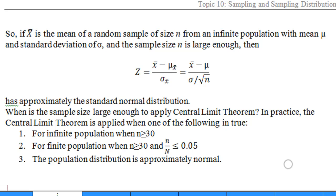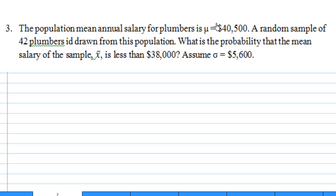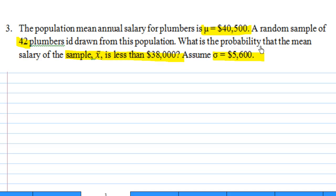So now we can answer that question. We know that mu is $40,500, we have a sample of size 42, and this is more than 30. n is 42, and we want to find the probability that the sample mean x-bar is less than $38,000. Sigma in this case is equal to $5,600.